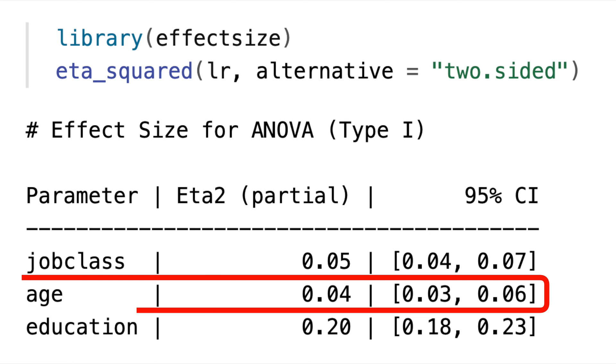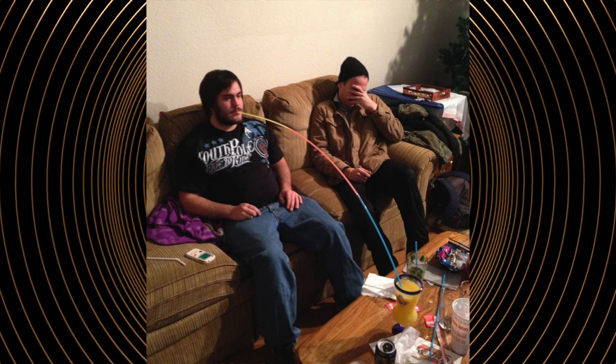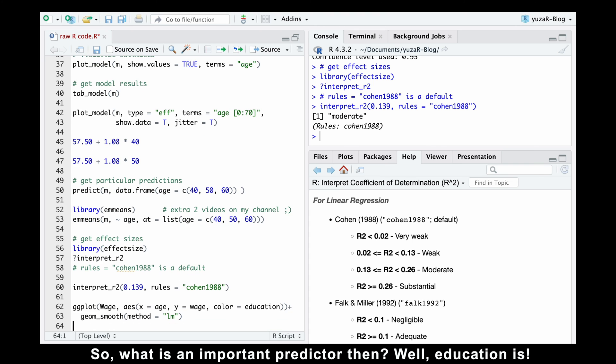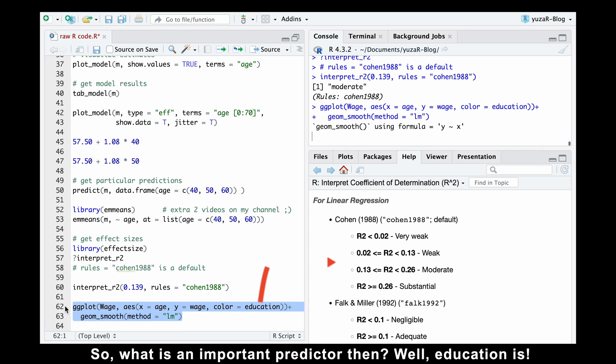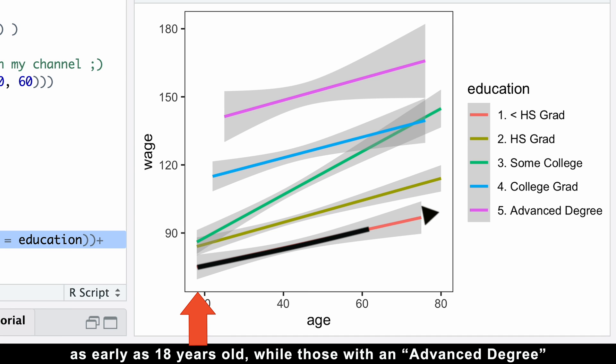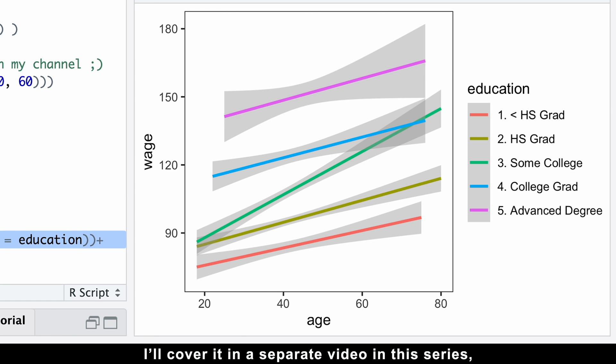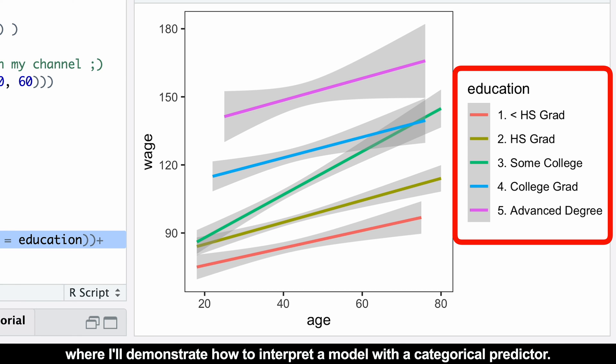Well, that could be because age is most likely not the most crucial predictor for salary. I mean, when I sit on the sofa, do nothing, and just get older, my salary won't grow. So what is an important predictor then? Well, education is. Specifically, folks without a high school diploma start in 70Ks as early as 18 years old, while those with an advanced degree begin with the salary of approximately 140Ks at the age of 25 after completing their studies. However, I'll cover it in a separate video in this series where I'll demonstrate how to interpret a model with a categorical predictor.